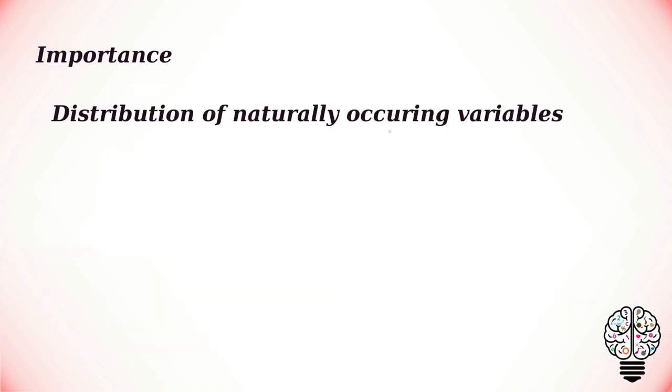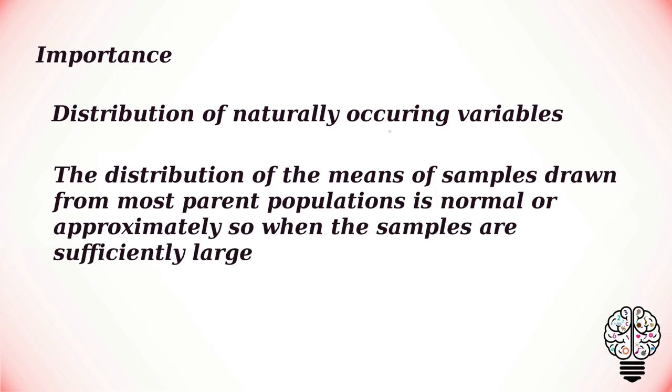In statistics, it is important because it is the distribution of many naturally occurring variables. For example, intelligence of 8th grade students. The distribution of the means of samples drawn from most parent populations is normal or approximately so when the samples are sufficiently large.